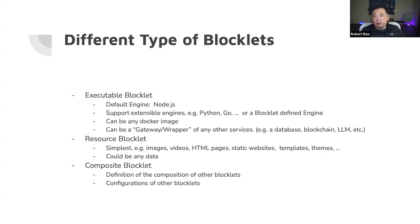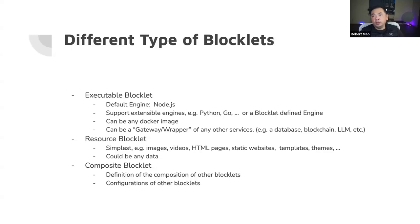A blocklet could also be a gateway or wrapper of external services. That is useful, for example, if you want to use a very large-scale database or a database on the cloud and you don't want to run that on your own blocklet server node — you can have a gateway or wrapper service blocklet. This is typically used when connecting to a blockchain or a large language model, where the blocklet acts as an interface for those external services.